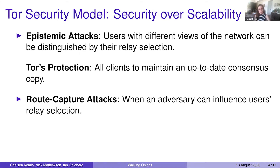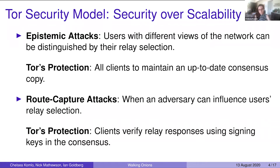The second attack is route capture attacks, where an adversary can influence users' relay selection. TOR protects against that because clients maintain this consensus, which is authenticated by the directory authorities. This consensus contains relays' signing keys, so clients are able to verify the responses from these relays using these keys, and all of this chains up to a root of trust.